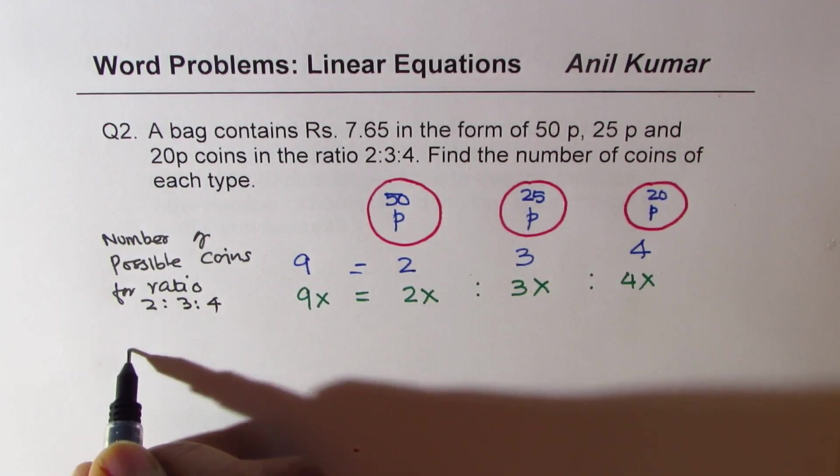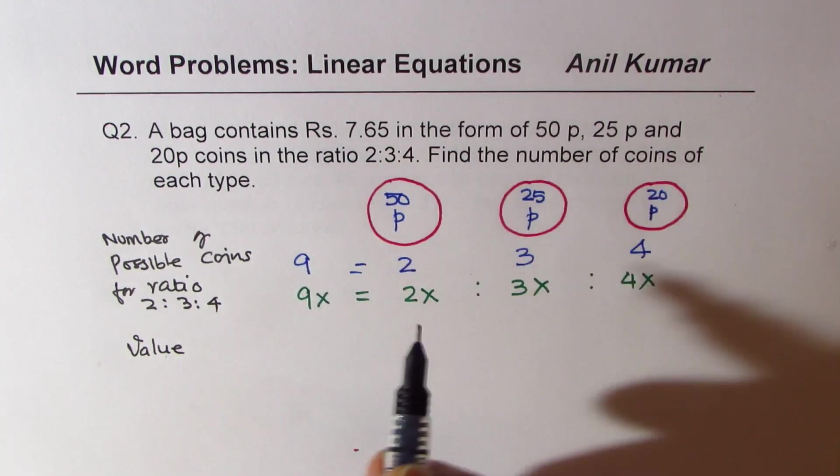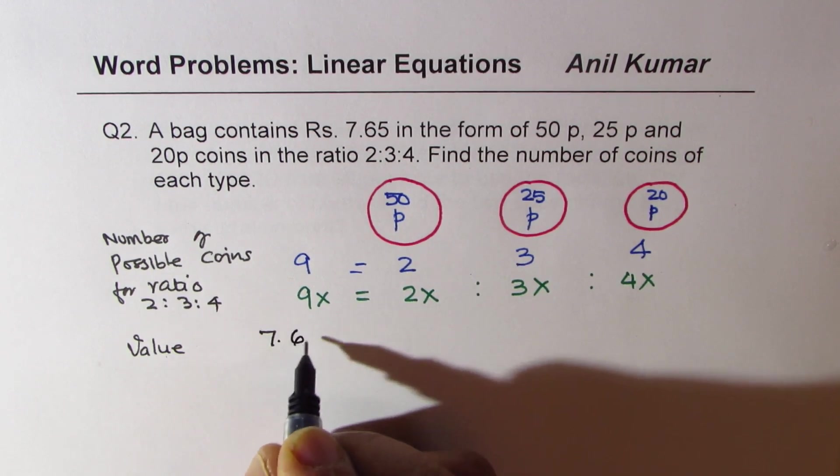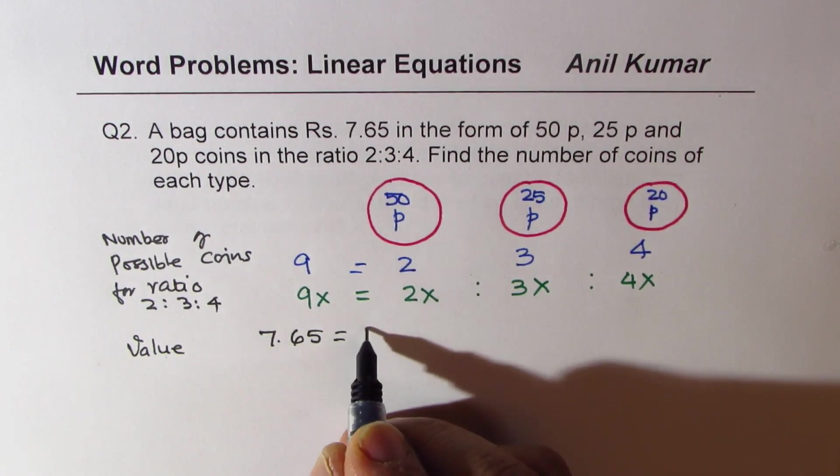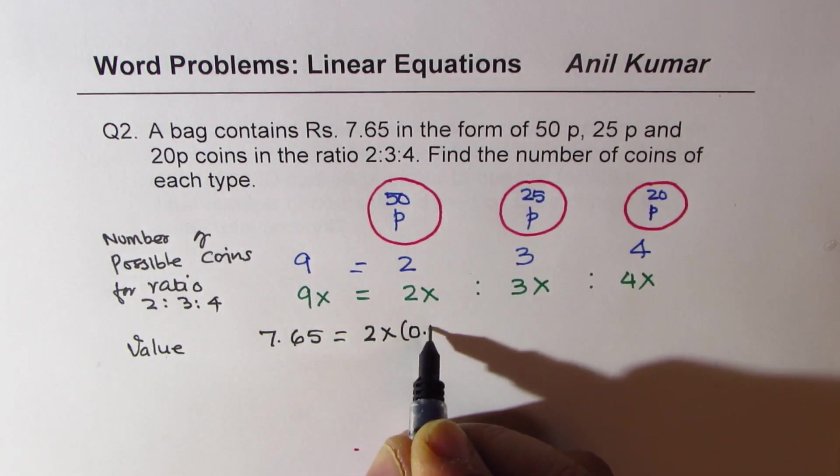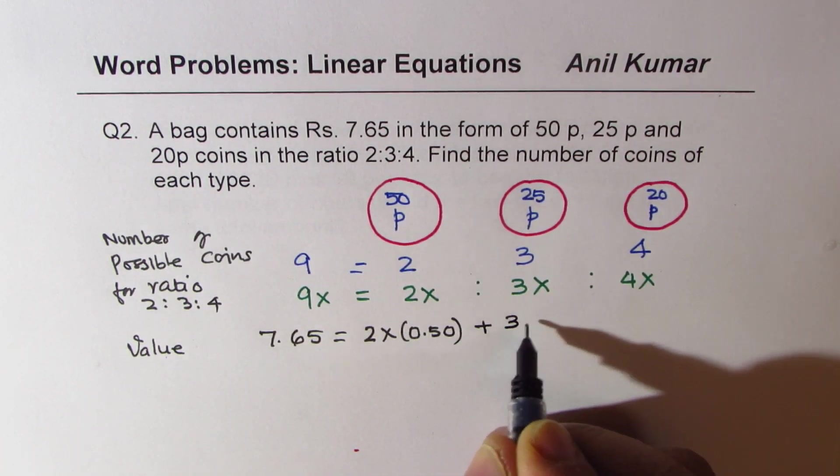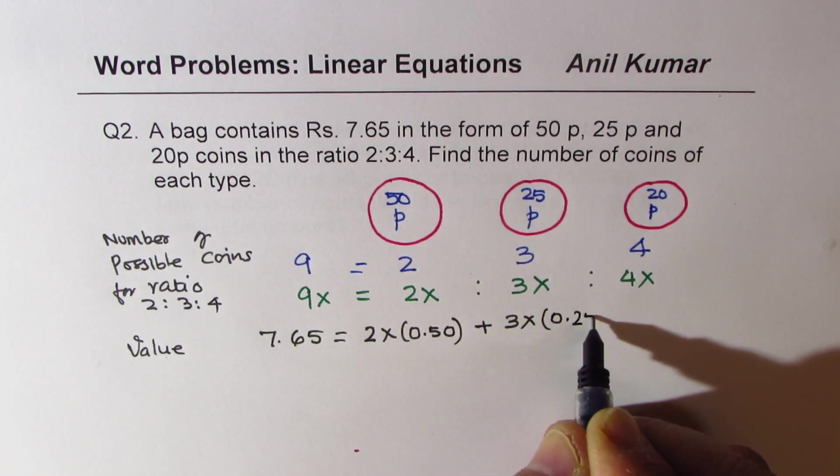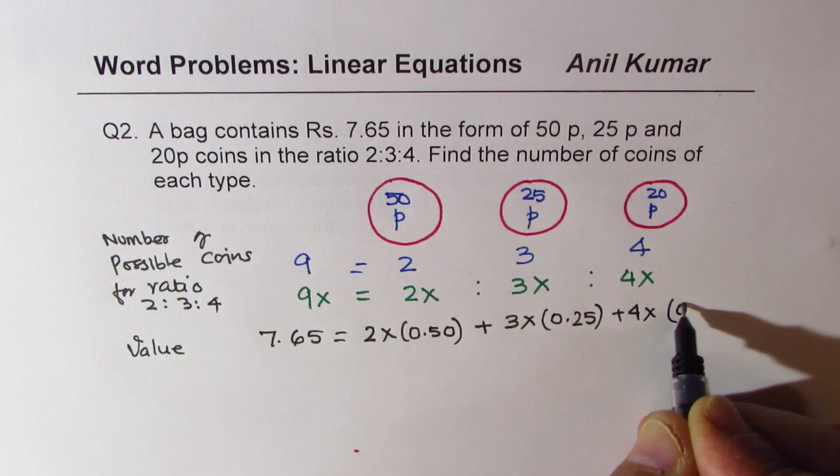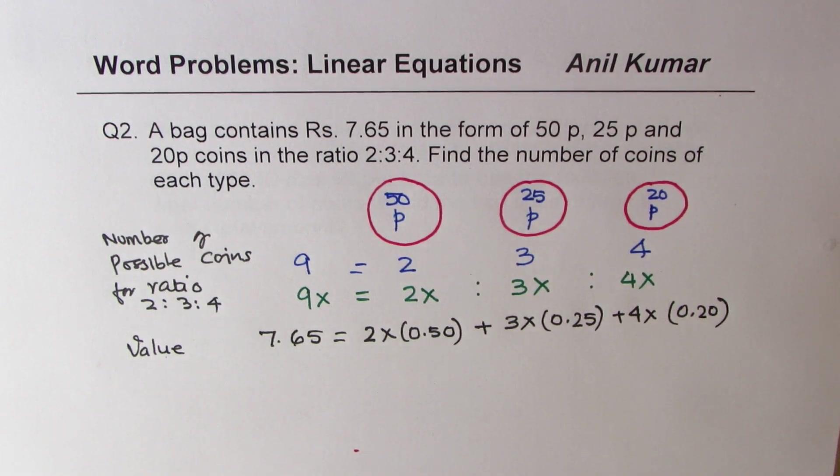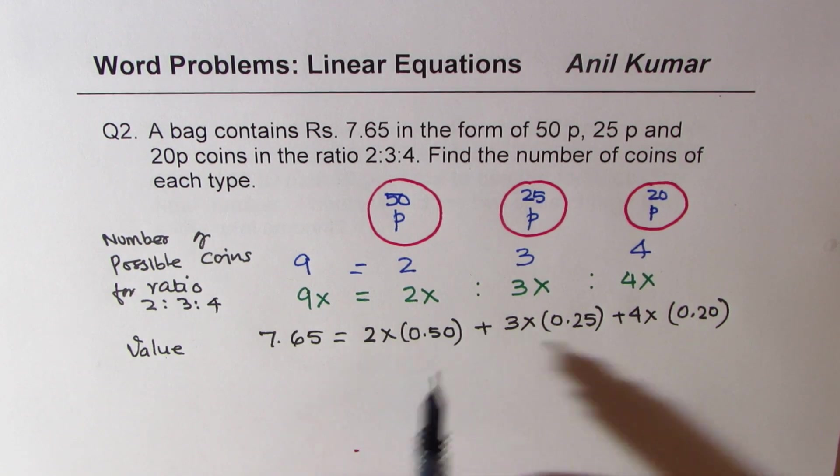Now second part is the value. Now let's look into the value part. Value is 7.65. So we could write 7.65 should equal each of this is 50 paisa, so we'll do 2x times 0.50 plus 3x times 0.25 plus 4x times 0.20. That's the whole idea. Now you have a linear equation with only one variable, x.